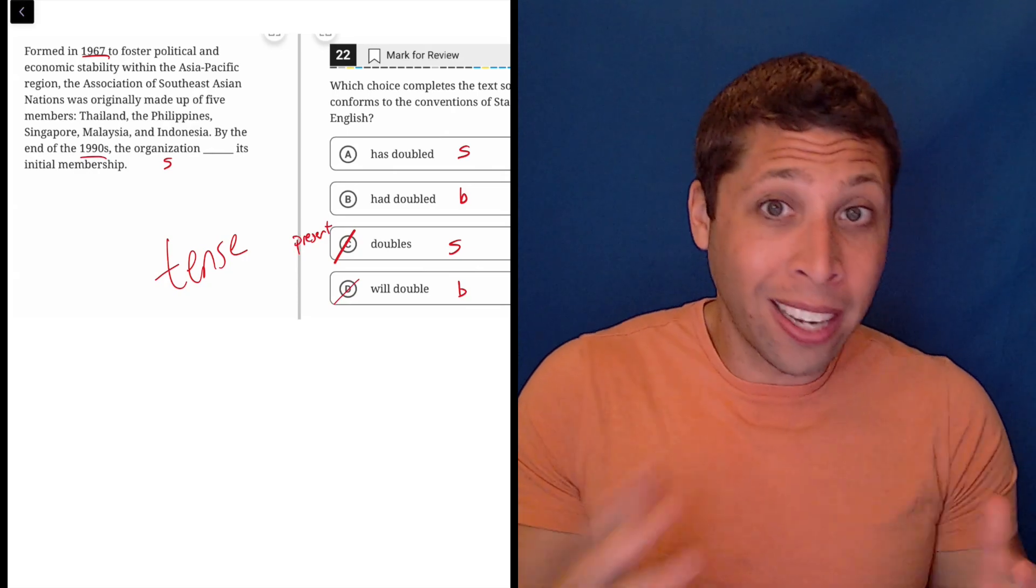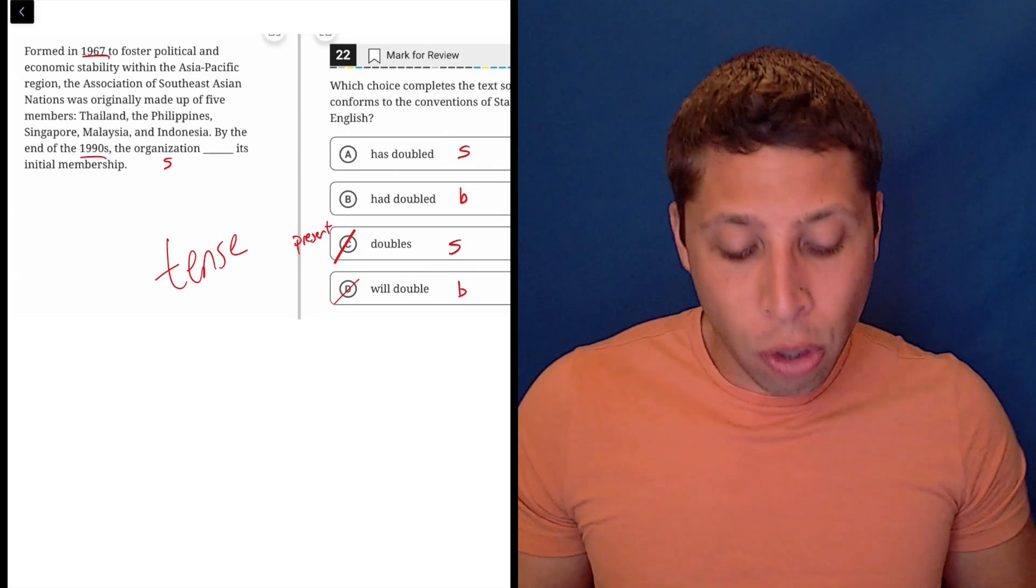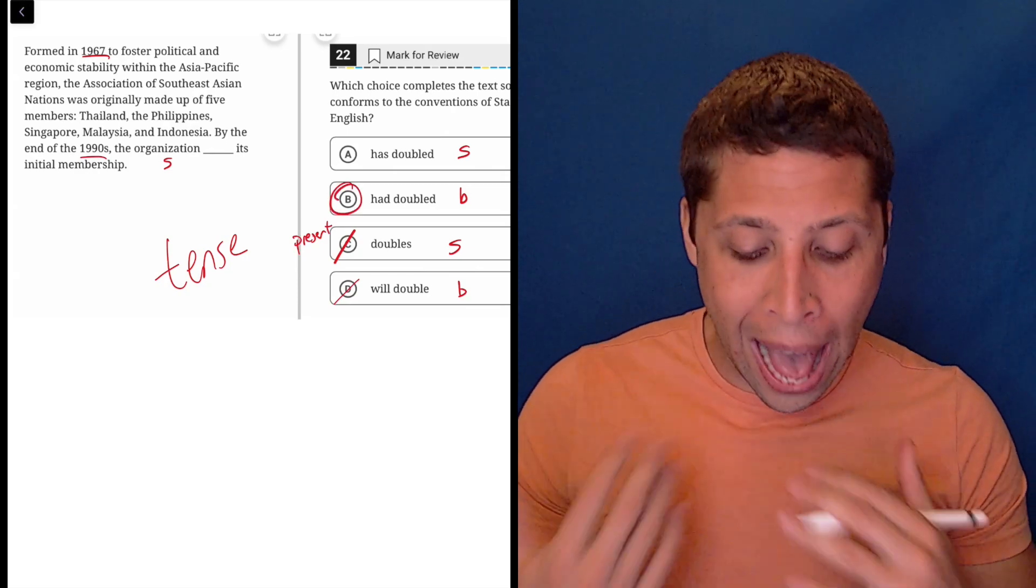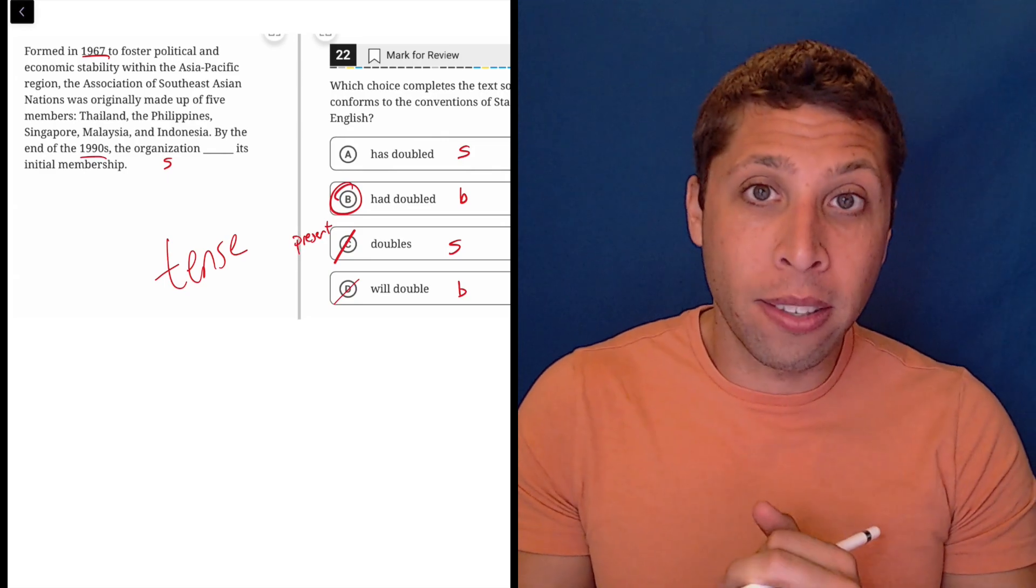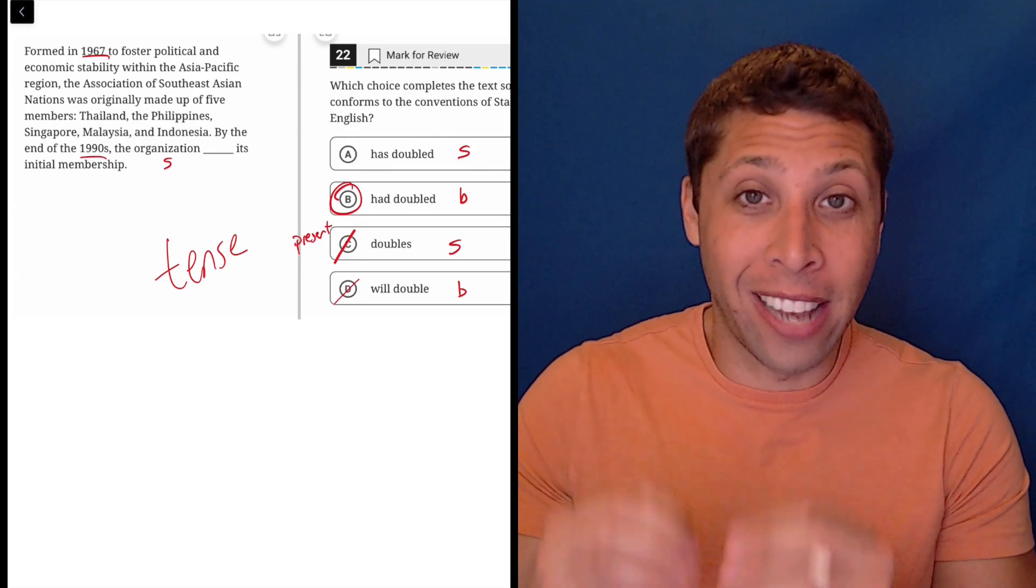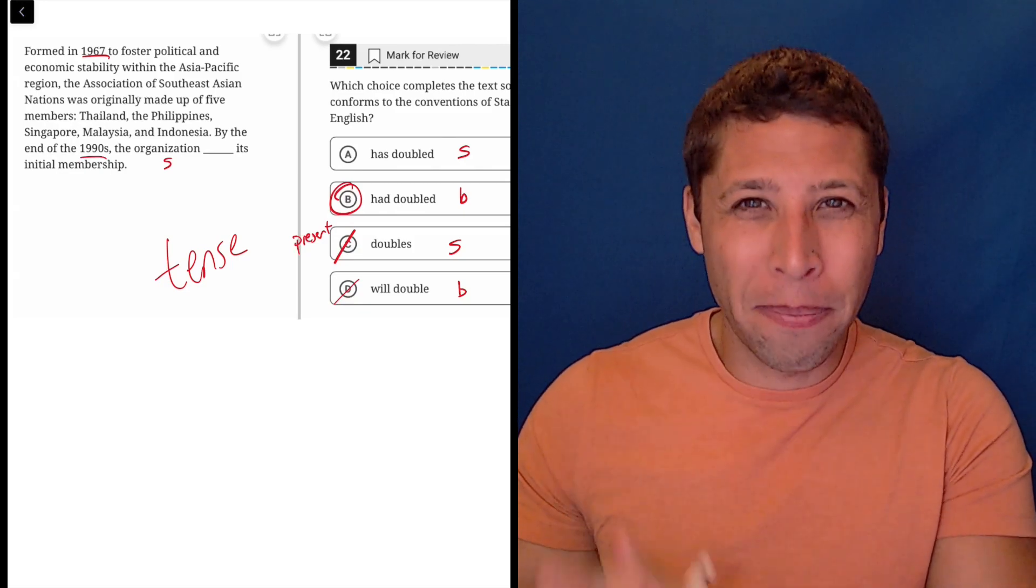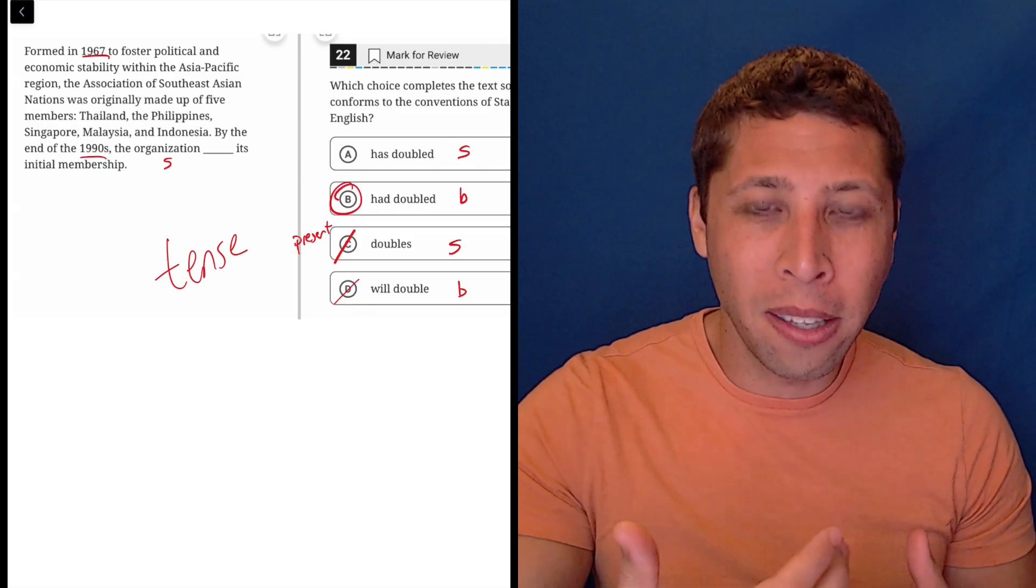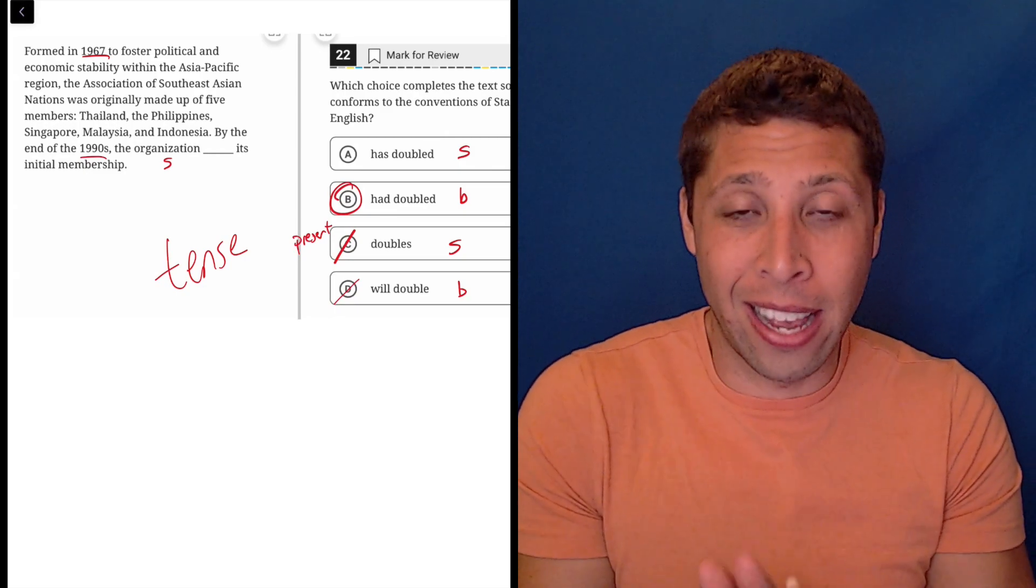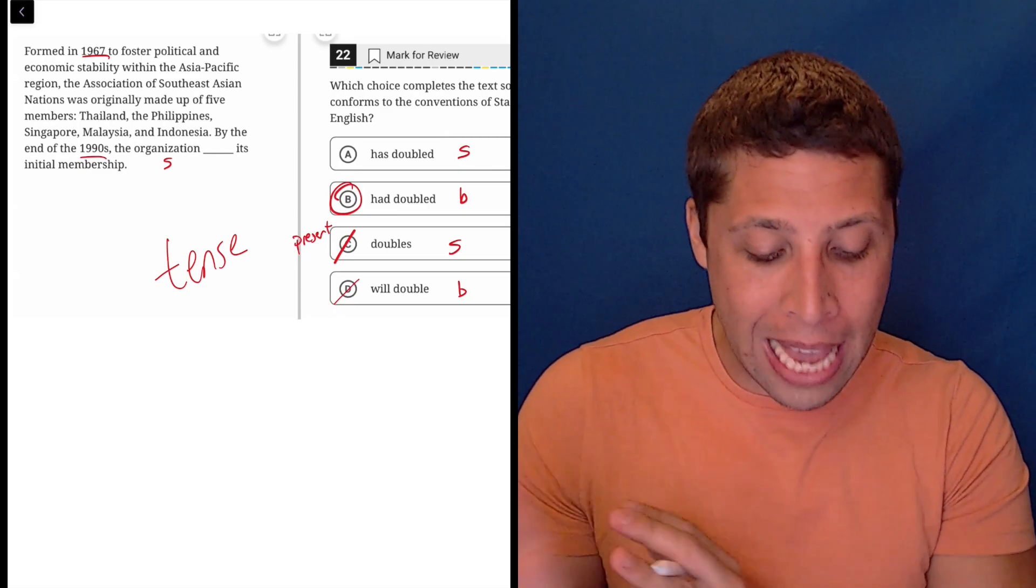So we need to use B here, that it had doubled, because 1967 is the past, but 1990s are also the past. And so it's something that had gone on for a while, but that has also ended as well. So that's the difference between A and B.